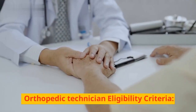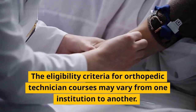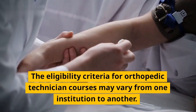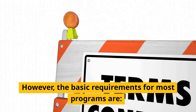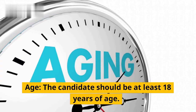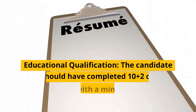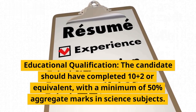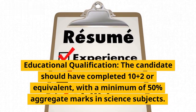The eligibility criteria for orthopedic technician courses may vary from one institution to another. However, the basic requirements for most programs are: the candidate should be at least 18 years of age, and should have completed 10+2 or equivalent with a minimum of 50 percent aggregate marks in science subjects.